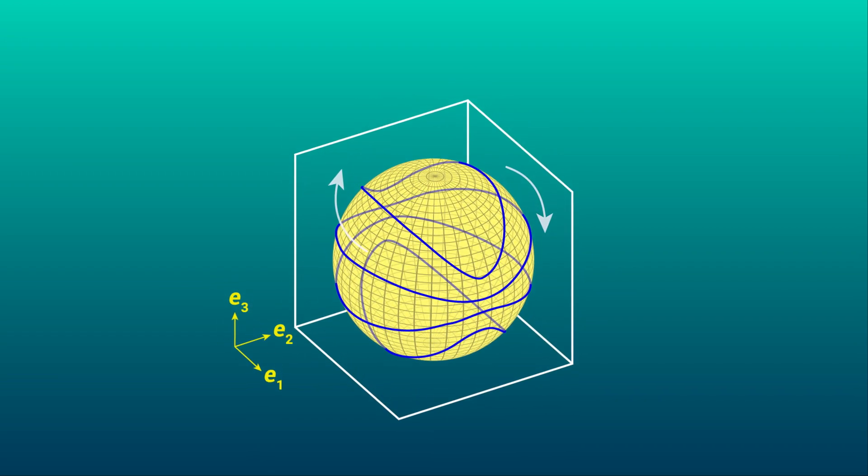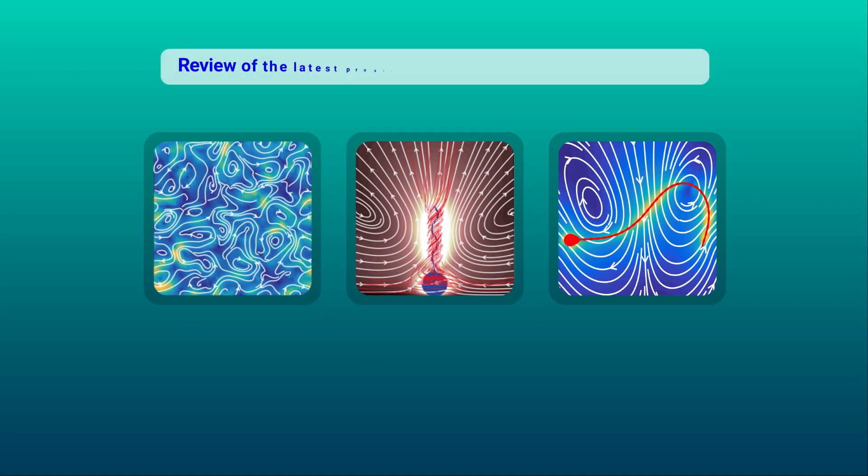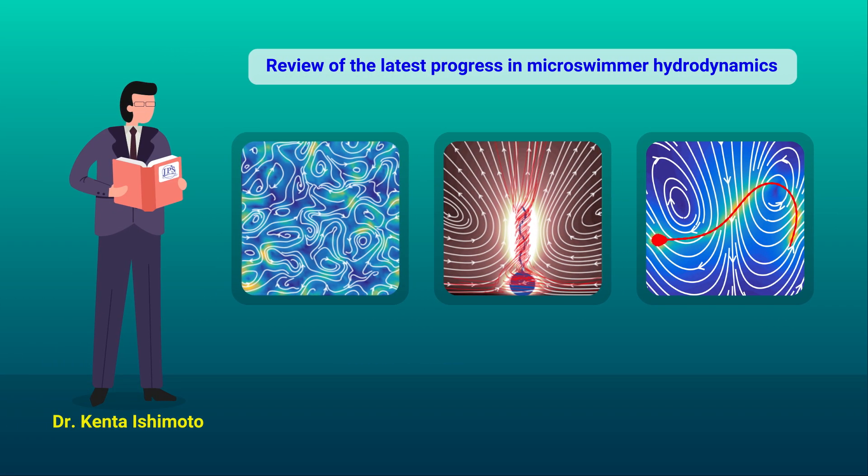In a recently published review, researcher Kenta Ishimoto from Kyoto University, Japan, has summarized the latest progress in our understanding of micro swimmer hydrodynamics through the lens of Jeffrey's orbits.